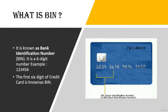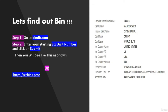BIN stands for Bank Identification Number. As shown in the figure, a credit card has 16 digits and the first six digits are known as the BIN. Two useful websites are BinDB.com and CCBinsPro.com.